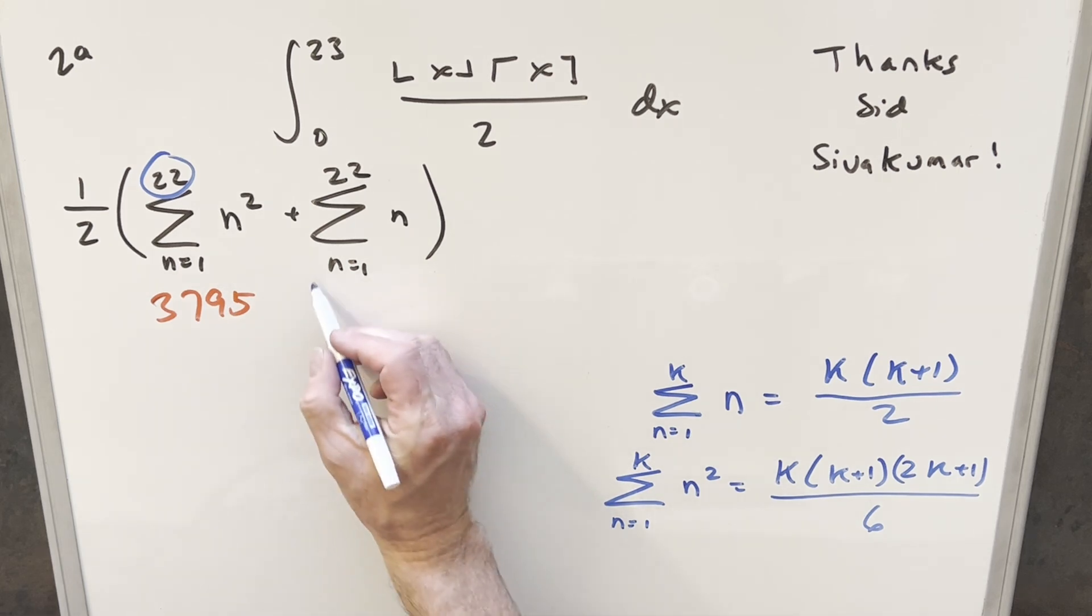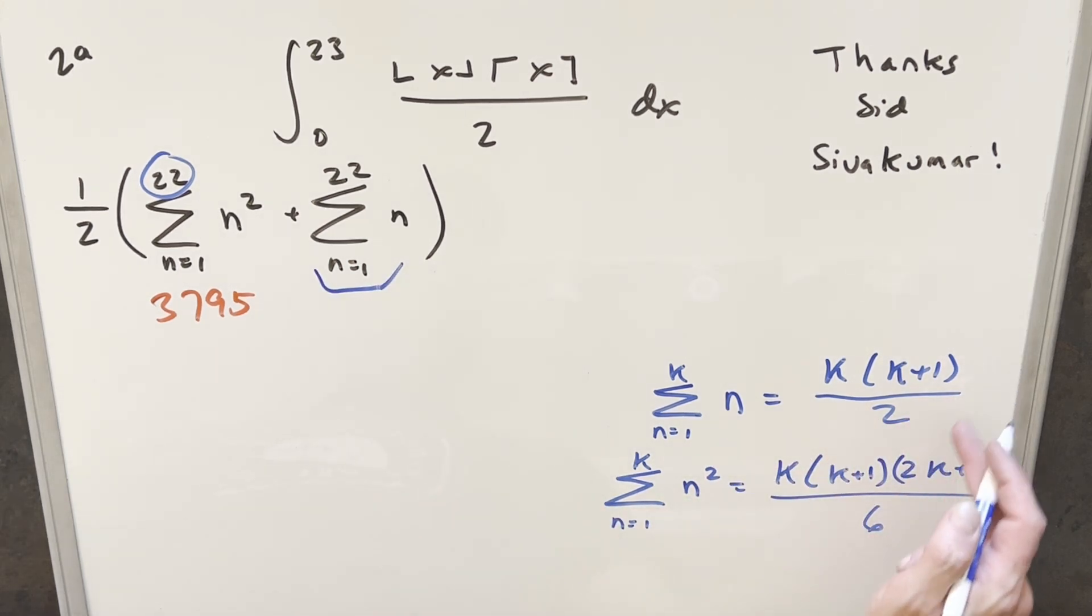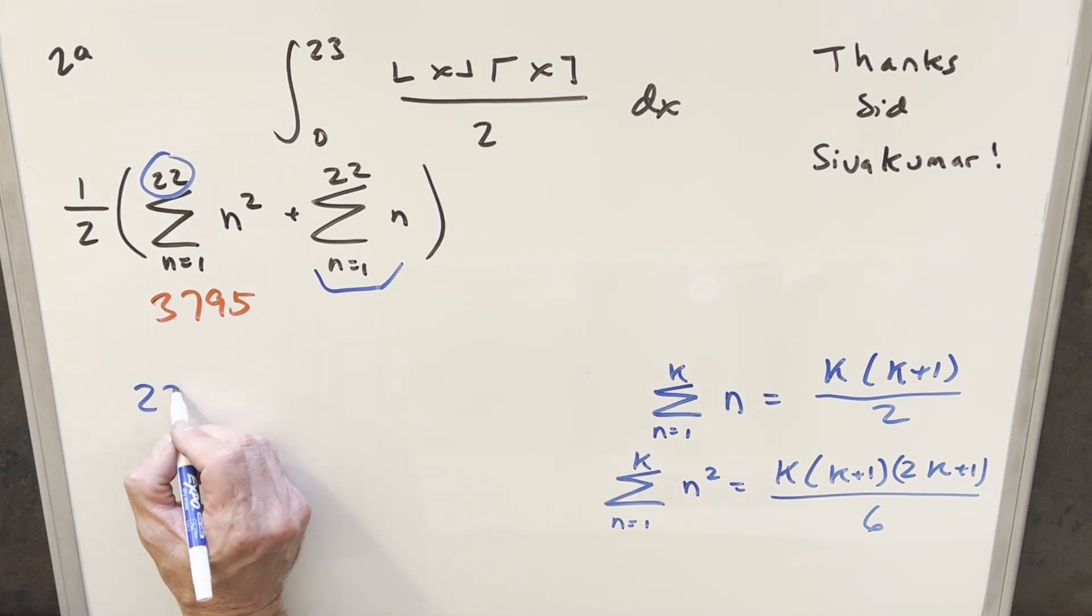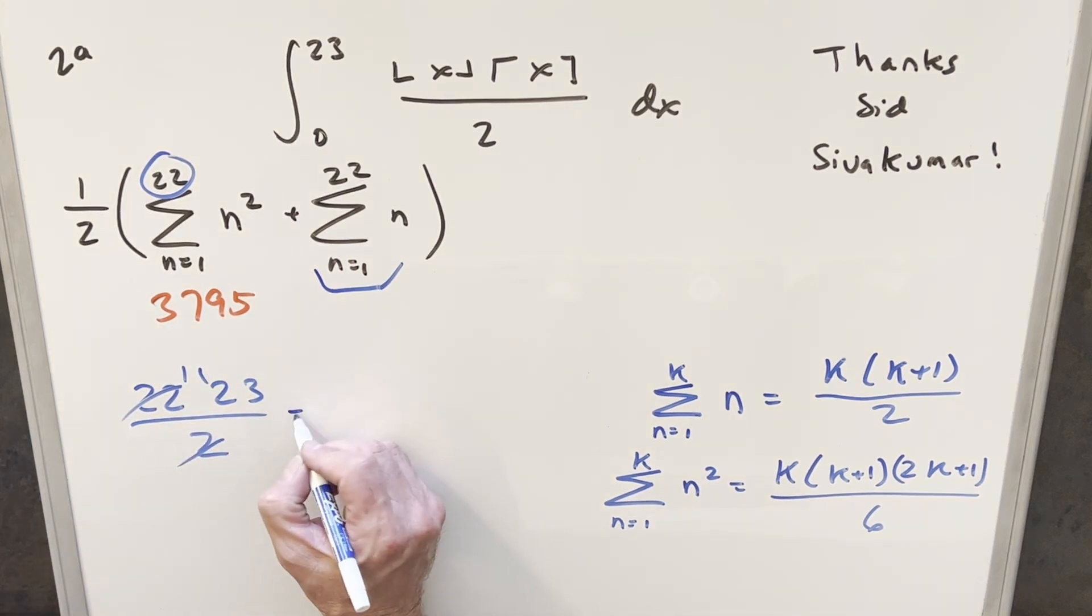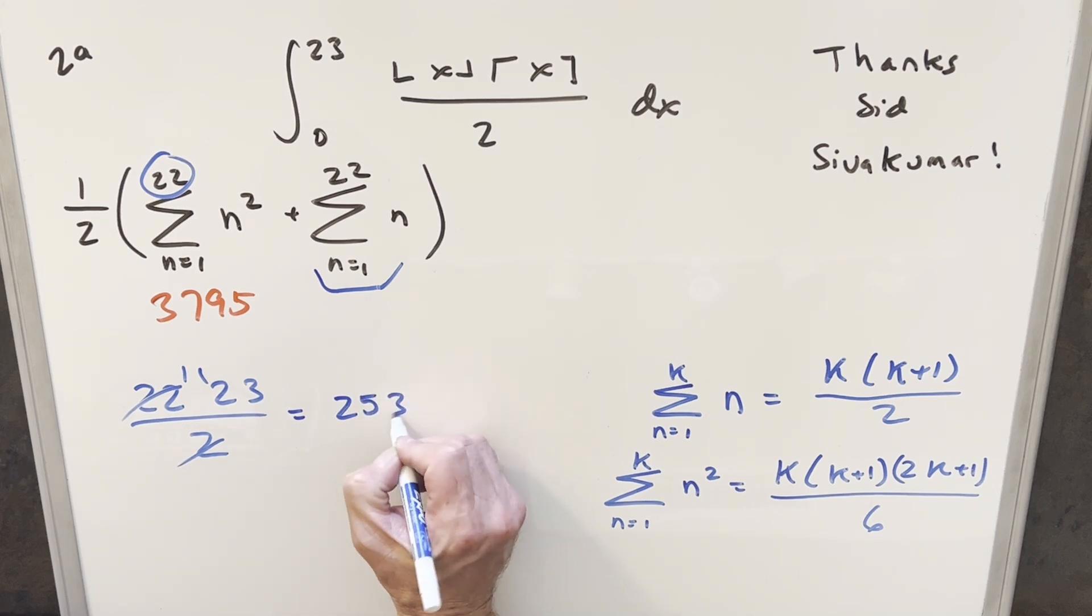Next for this one here, this is quite a bit simpler. We just have k times k plus 1 over 2, where k is 22. So what we're looking at, it's going to be 22 times 23 over 2. Cancel 2 with 22. We have 11. 11 times 23, that's just going to be 253.